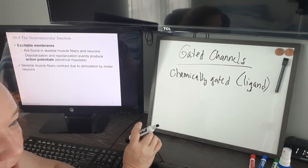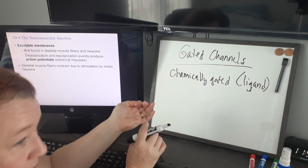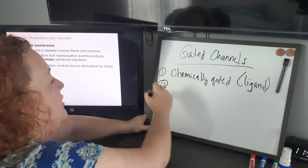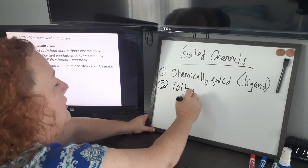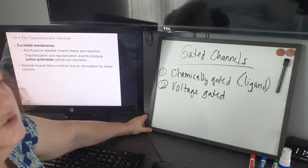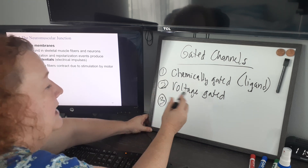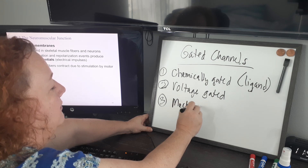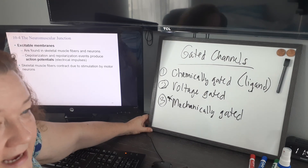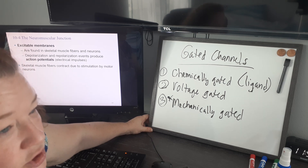What's going to open and close a chemically gated channel is when the right chemical or molecule that fits the shape on the outside of the receptor binds — it will open the channel. The second type is called a voltage-gated channel, which responds to changes in voltage or electrical current. The third type is called a mechanically gated channel — we're not going to touch on these today; we'll learn more about them in anatomy two when we start talking about the special senses.